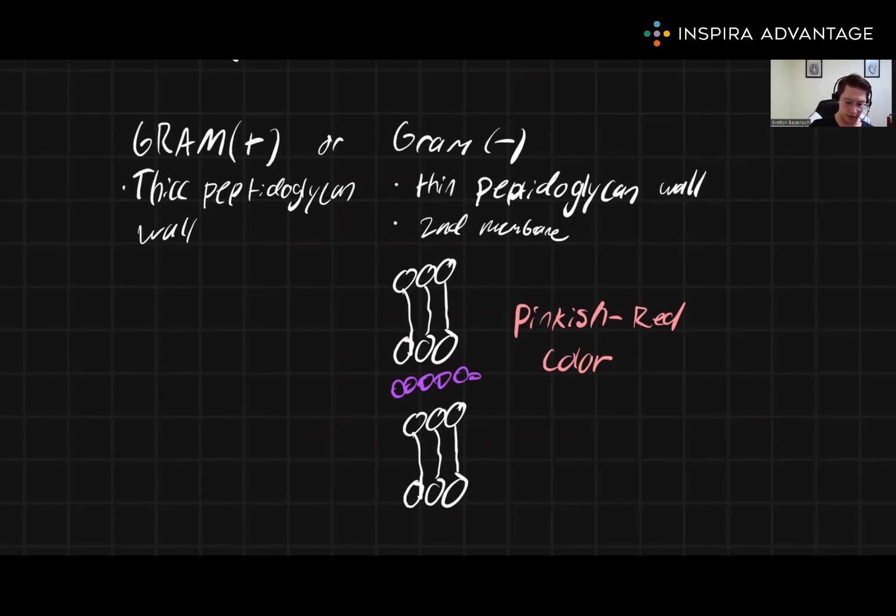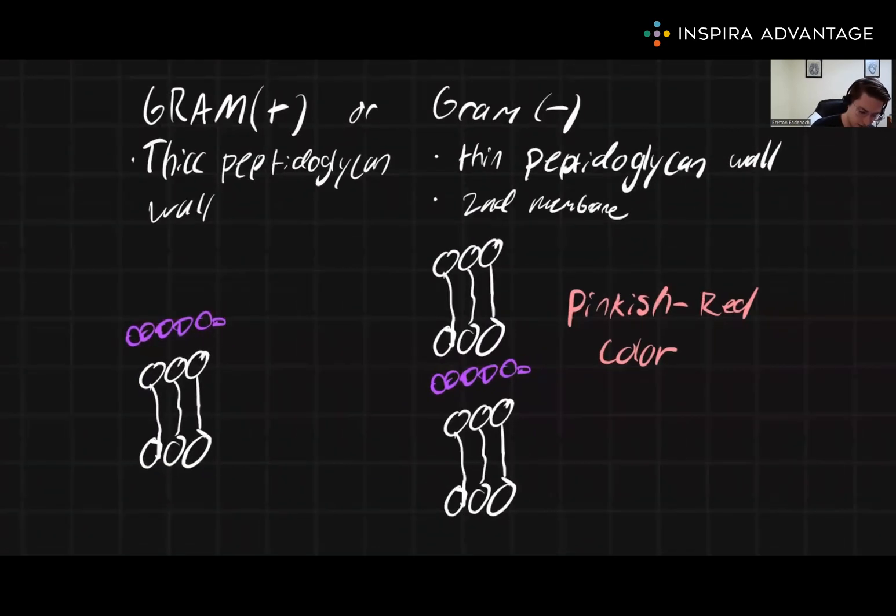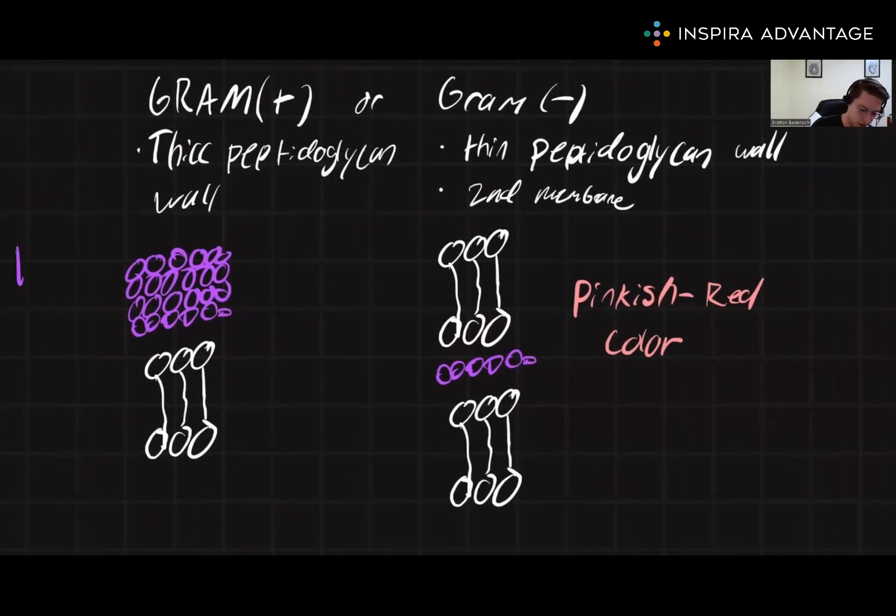Again, we'll draw this out to kind of see what this looks like. So just like in the gram negative, we still have a base cell membrane. But now we are going to have a very thick peptidoglycan wall, which I'm showing here in purple. And because there's no outer membrane to prevent that peptidoglycan wall from showing up, this is going to be a dark purple color.